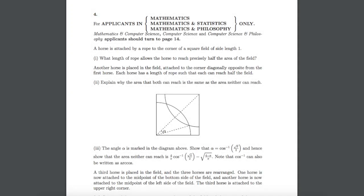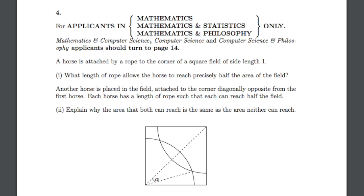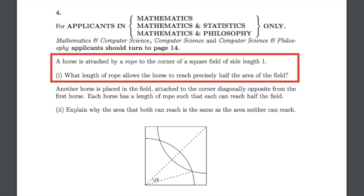Hey everyone, today we're going to look at question 4 from the 2017 MAT exam. The question starts off by telling us that a horse is attached by a rope to the corner of a square field of side length 1. For part I, we need to work out what length of rope allows the horse to reach precisely half the area of that field.